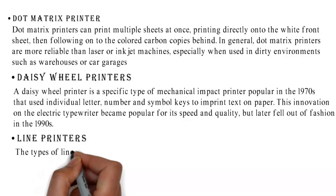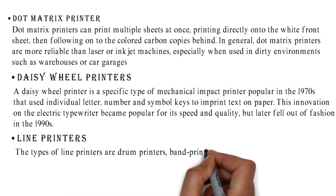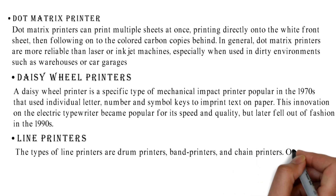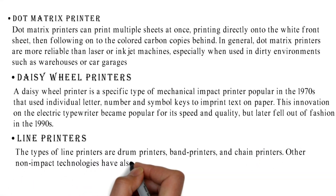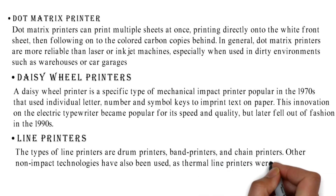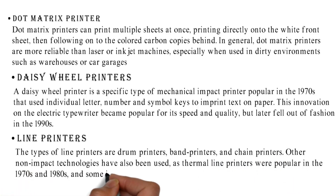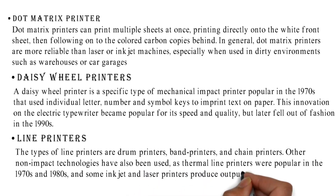Line printers. The types of line printers are drum printers, band printers, and chain printers. Other non-impact technologies have also been used, as thermal line printers were popular in the 1970s and 1980s, and some inkjet and laser printers produce output a line or a page at a time.